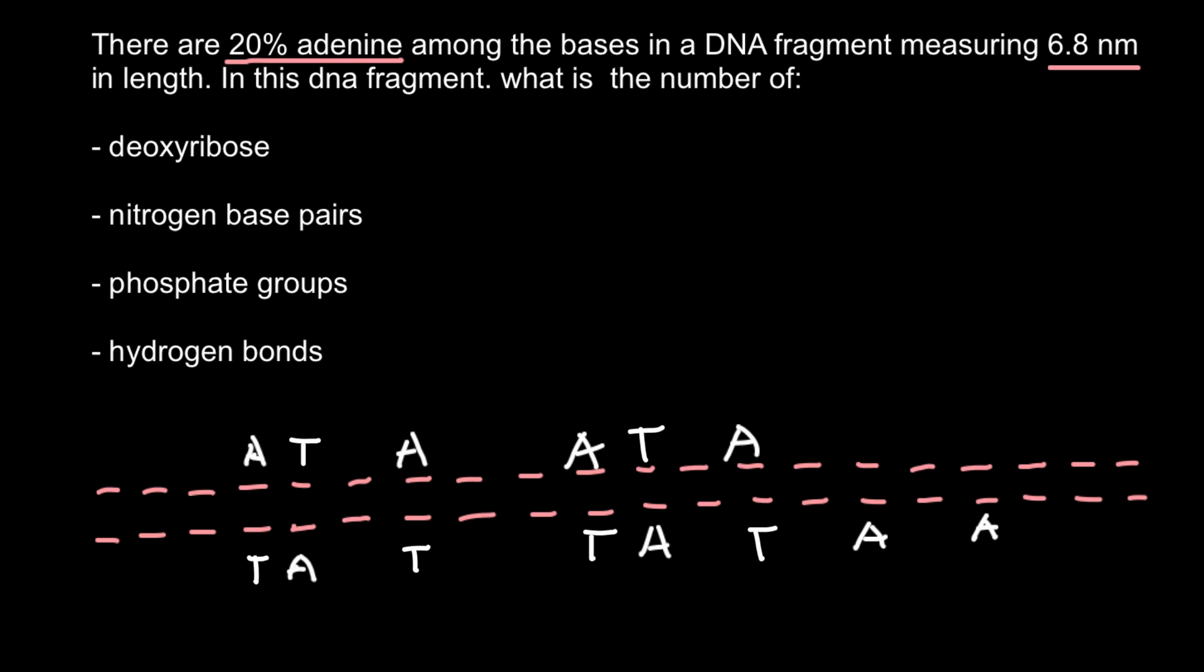And the rest 60 percent would be cytosine and guanine. Once again we have 20 percent adenine, 20 percent thymine. So these two make 40 percent. So 60 percent of whatever's left would be cytosine and guanine. So let's put randomly cytosine and guanine on both strands.